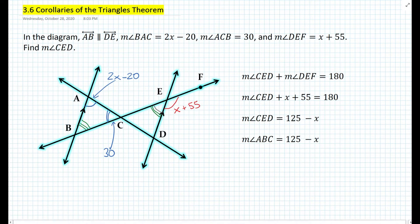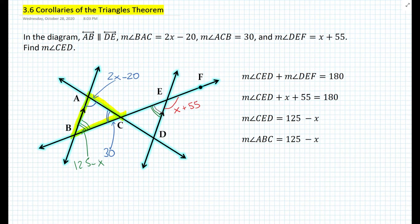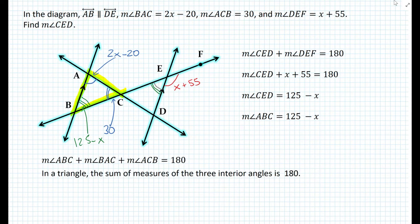If we look at triangle ABC — let's highlight the triangle — we now have everything needed to solve for x. We know that angle ABC is 125 minus x, angle BAC is 2x minus 20, and angle ACB is 30 degrees. All we need to do is add them all up and set them equal to 180 degrees. In a triangle, the sum of the measures of the three interior angles is 180.